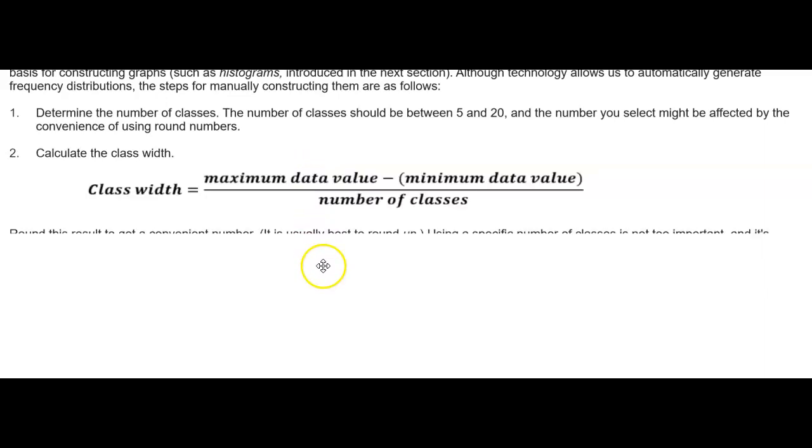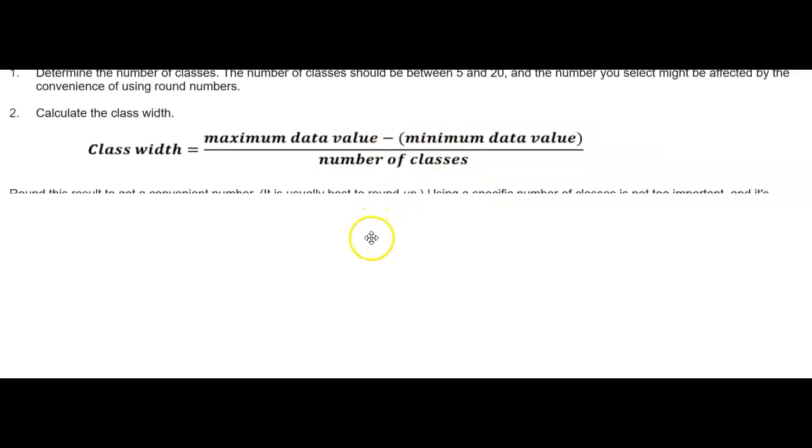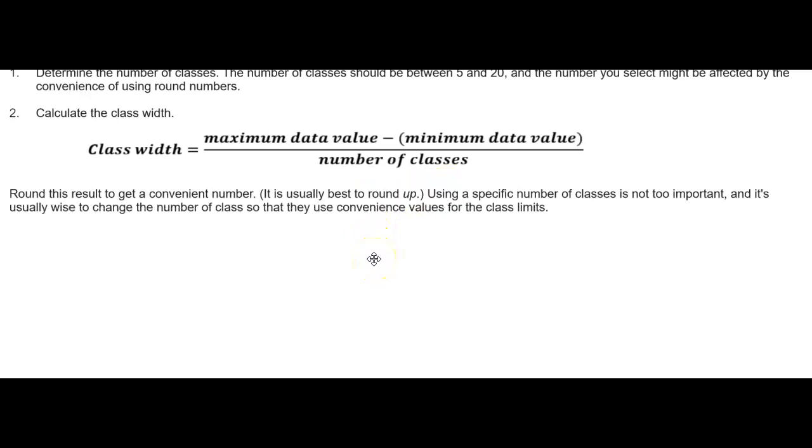class width. The formula for the class width is the following: it's going to equal the maximum data value minus the minimum data value divided by the number of classes. Then once you get that number, you would round